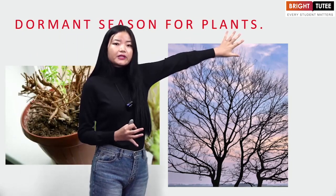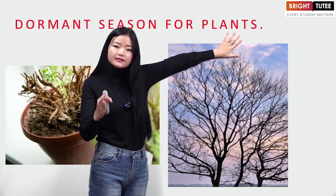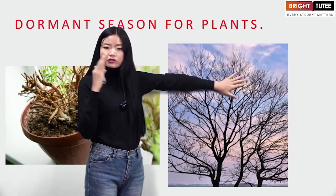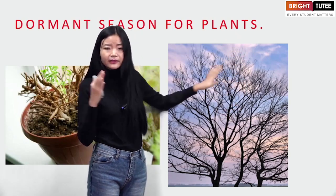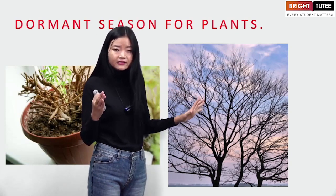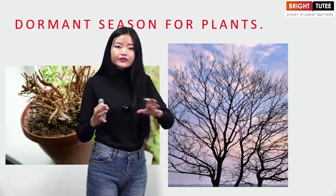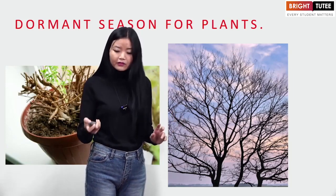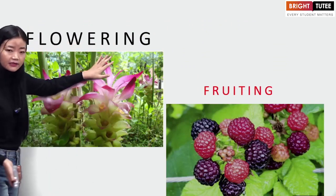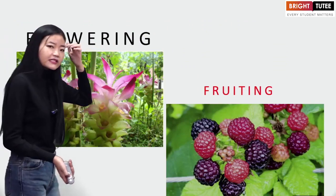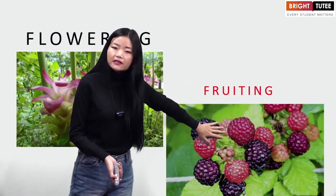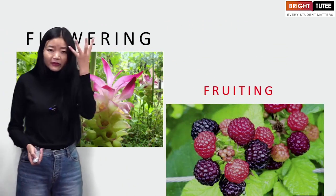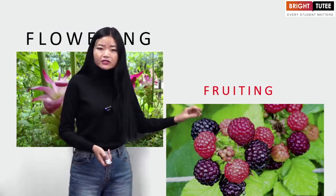To summarize: during the dormant season, plants stop growing, start changing color, and leaves fall to the ground. There is also a flowering season — where you see flowers blooming — and a fruiting season — where you see fruits bearing from the plants.